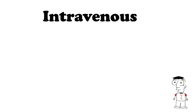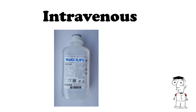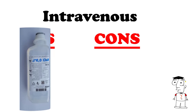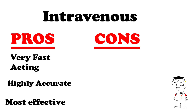Intravenous or IV medications are given directly into the vein, dissolved into a type of IV fluid and then administered. Pros are that this is the quickest form of absorption as it directly enters the circulatory system. It can be tapered to achieve specific dosing through monitoring of blood work, and it's extremely effective and dependable.